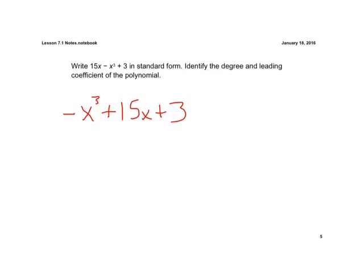Now it says identify the degree. Remember, the degree of a polynomial is a little different than a monomial — we just look for the highest exponent. We see our highest exponent here is a third, so our degree is going to be 3.